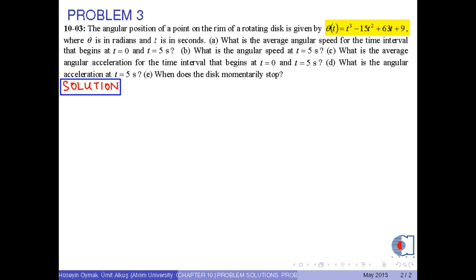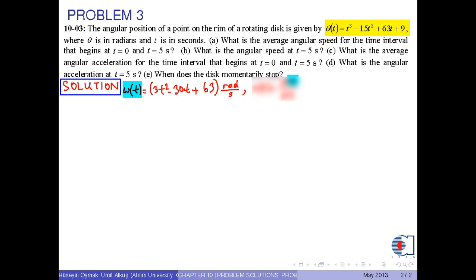First, using the angular position formula theta of t, which is in radians, since angular speed is the first time derivative of the angular position — that is, omega(t) equals d theta over dt — we find omega(t) equals 3t² minus 30t plus 63 radians per second. Also, since the angular acceleration alpha(t) is the first time derivative of the angular speed, we get alpha(t) equals 6t minus 30 radians per second squared.